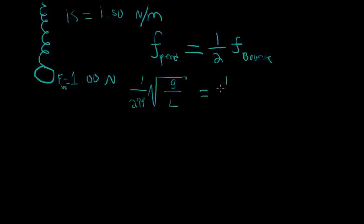This equals 1 half times the frequency of when it's bouncing, which by definition is 1 divided by 2π times the square root of k divided by the mass of the apple. We can figure that out easily by understanding that the force of weight is always equal to the mass times gravitational acceleration, so m is just equal to F_w over g.